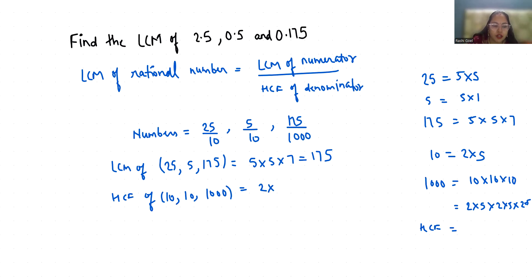So LCM of rational number. LCM of 2.5, 0.5 and 0.175 is 175 by 10 which equals 17.5.